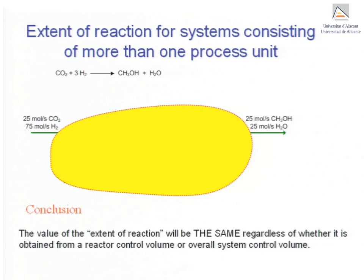In conclusion, what we are trying to emphasize is that the value of the extent of reaction will be the same regardless of how it has been obtained — by a mass balance over the reactor or by a mass balance over the whole system. The extent of reaction is the number of moles reacted, either consumed or formed, and this happens only in the reactor.